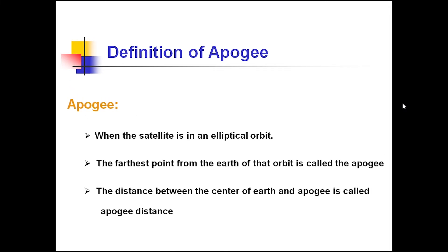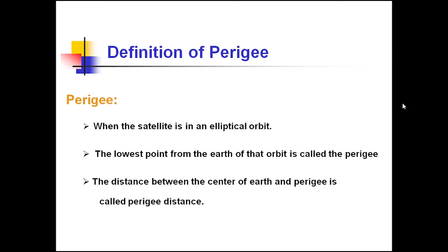Now we define Apogee. When the satellite is in an elliptical orbit, Apogee is the farthest point from Earth of that orbit. The distance between the center of the Earth and Apogee is called the Apogee distance. Perigee is the lowest point from Earth of that orbit. The distance between the center of the Earth and Perigee is called the Perigee distance.